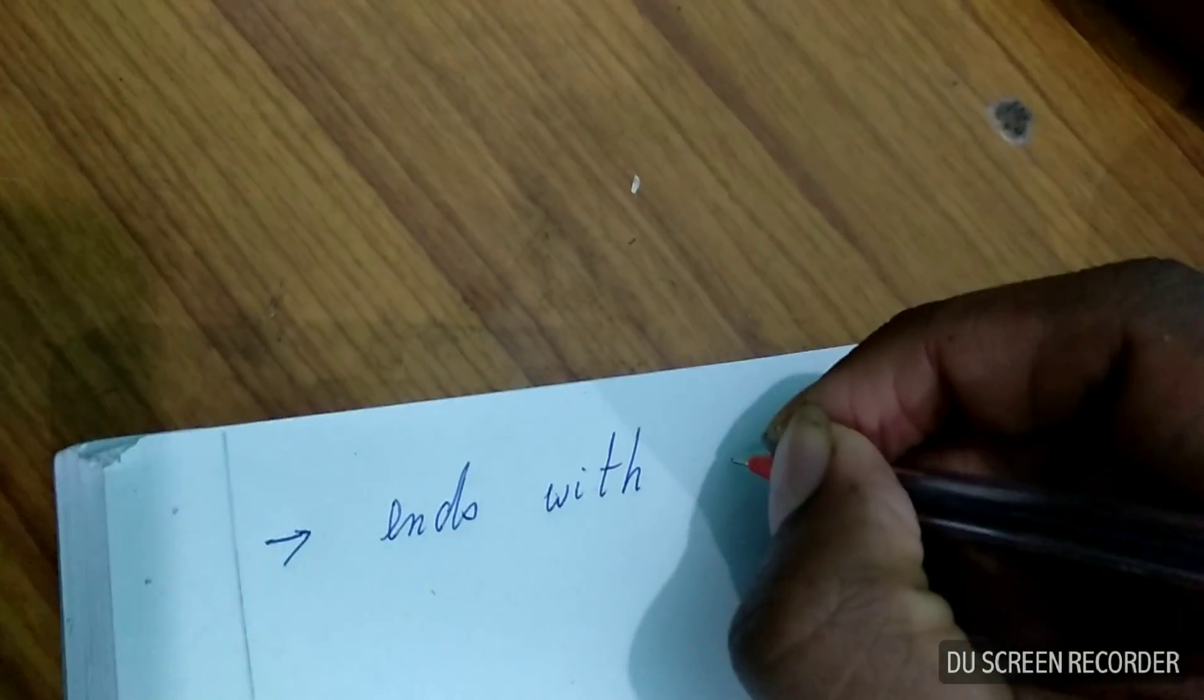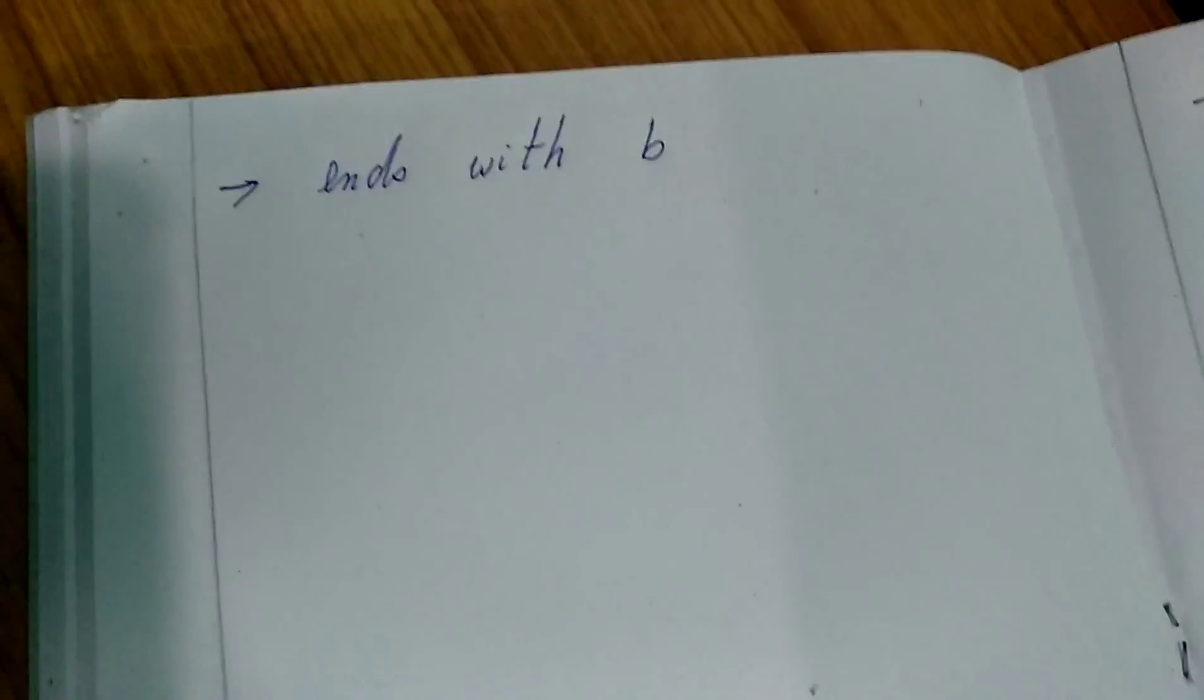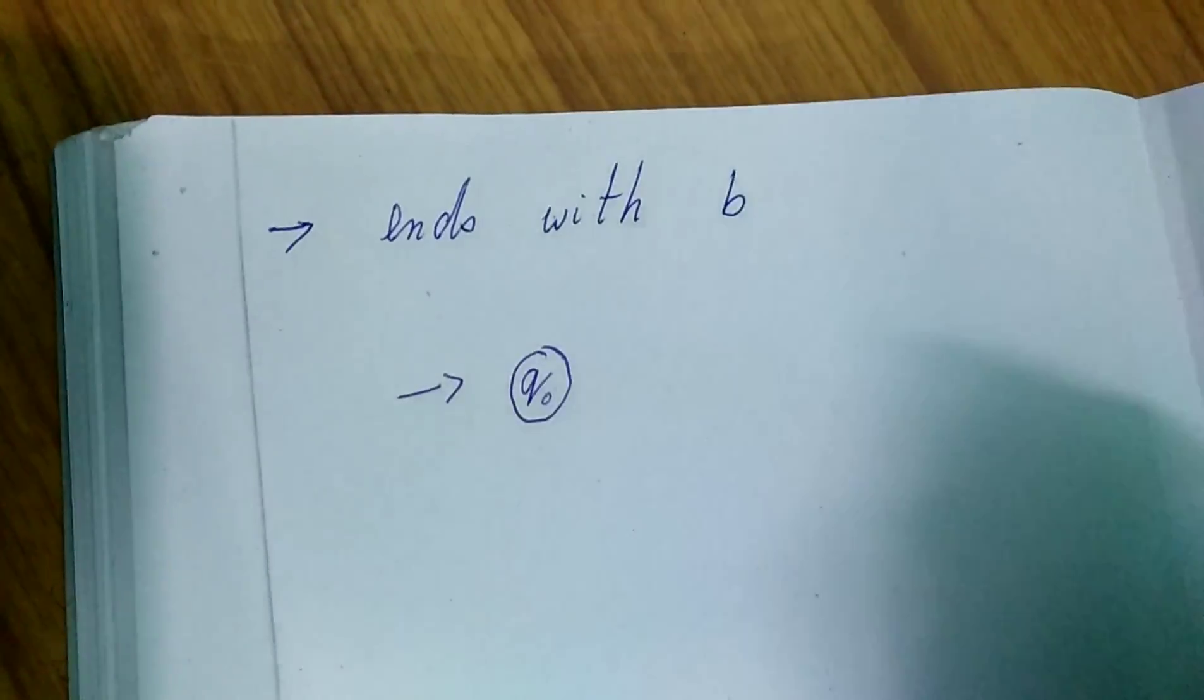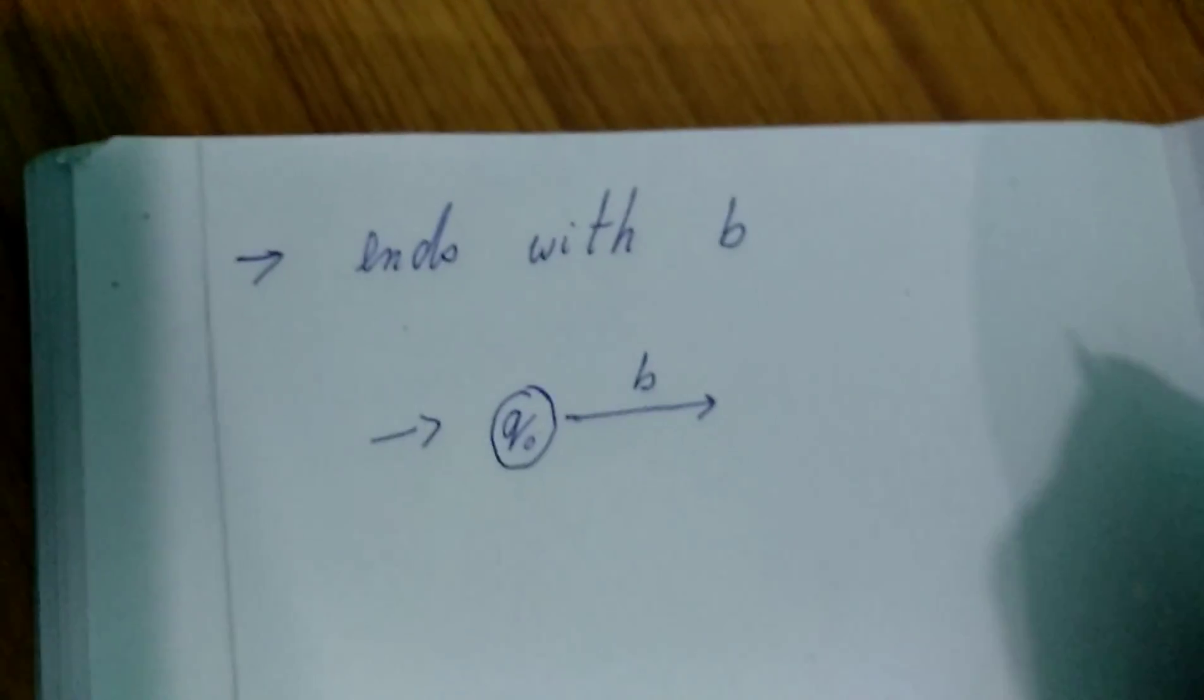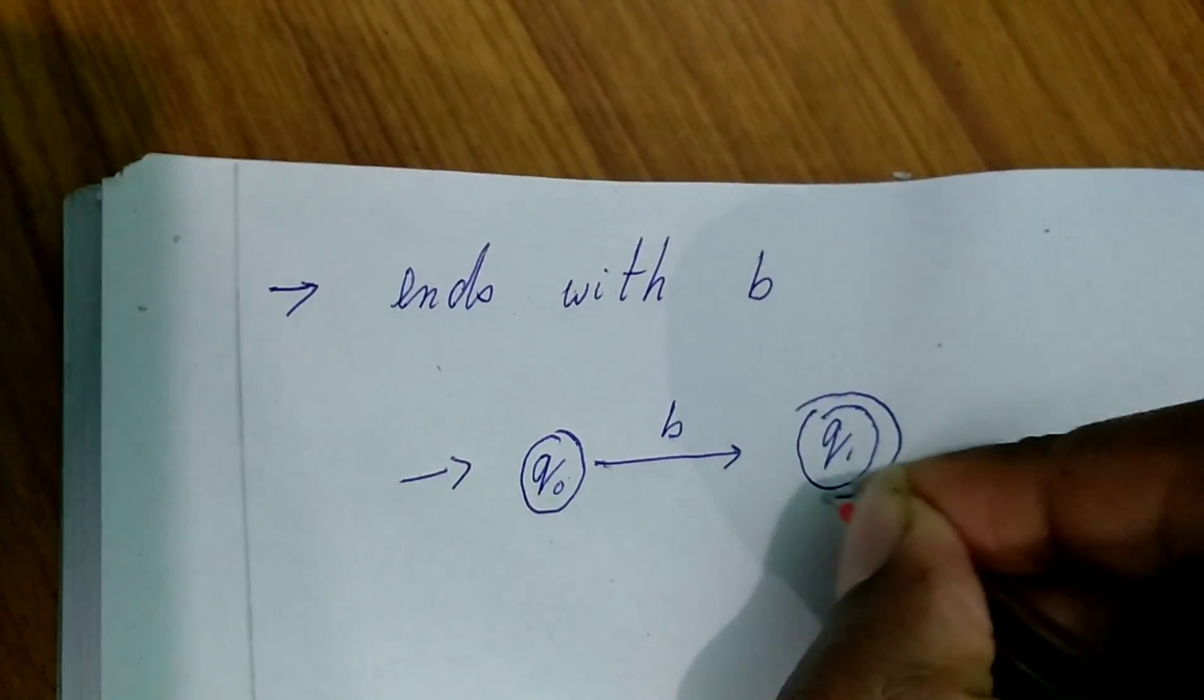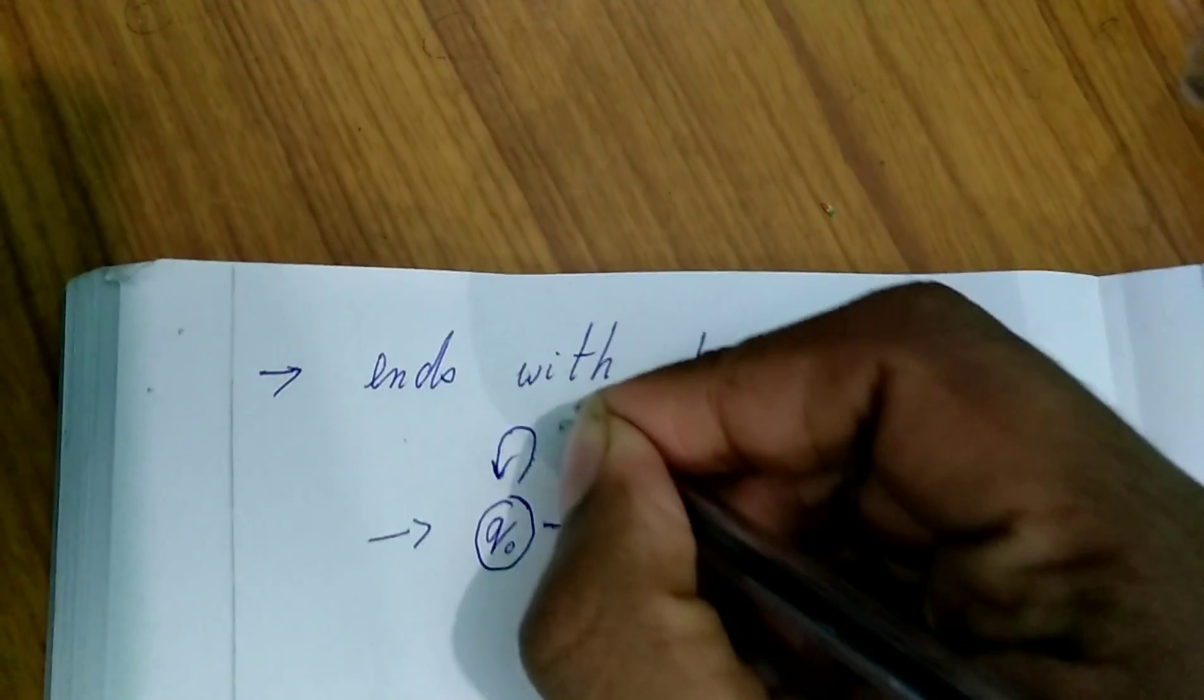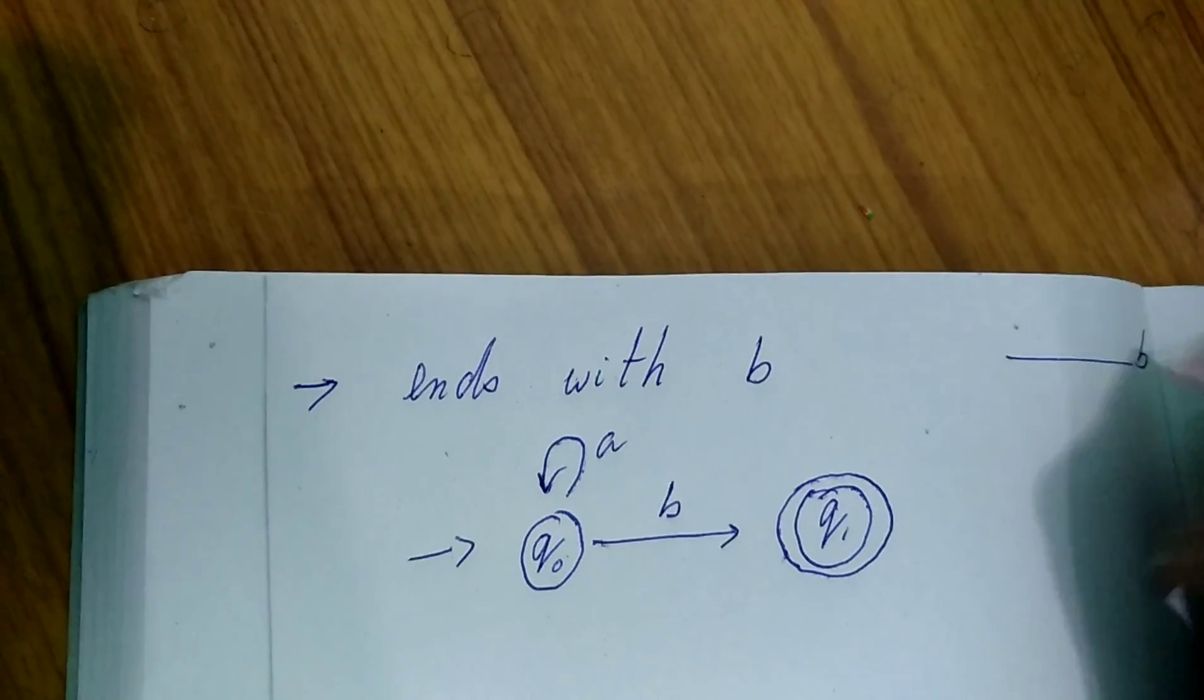Now let's go to another problem: ends with B. So first of all, Q0, this is the initial state. And the condition is B. As we get B, we will go to the Q1. Let's make it as final state with two circles. The only requirement is the last letter should be B.